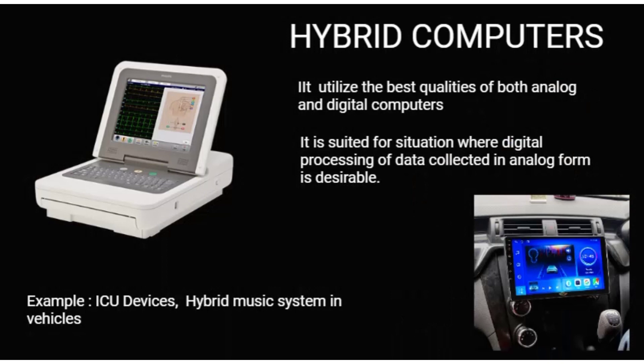The third category is hybrid computers. Hybrid computers smartly collect the best properties of both analog and digital computers. These computers can accept and process data in analog form and also present data digitally. For example, in the medical field, ICU machines continuously monitor oxygen level and blood pressure in analog form but display the readings digitally. ICU devices and hybrid music systems in vehicles are also examples of hybrid computers.